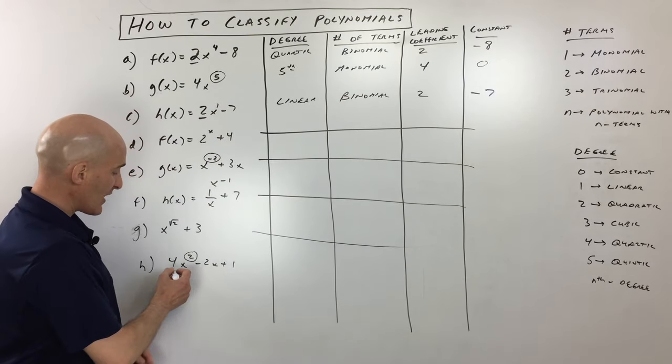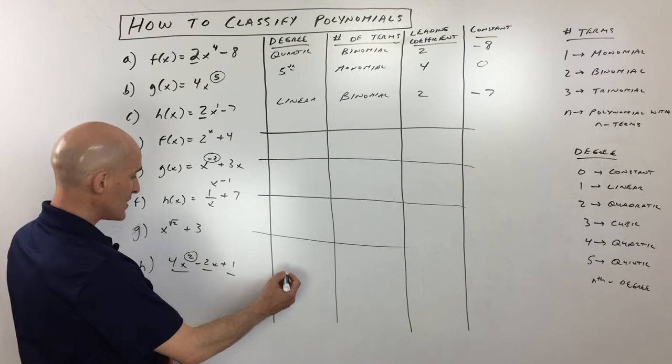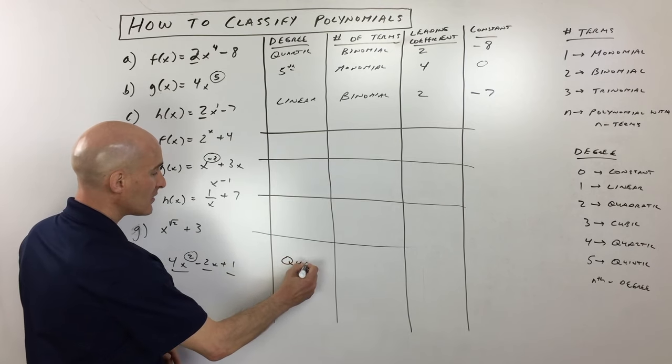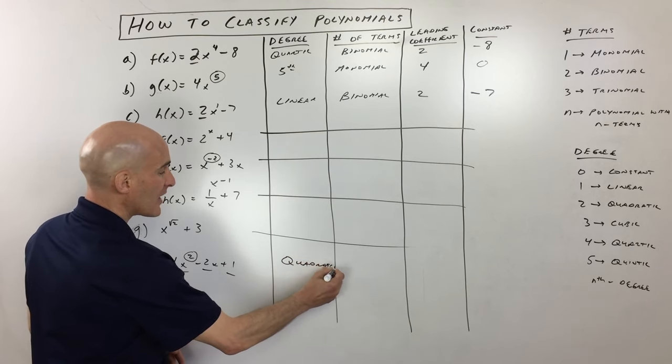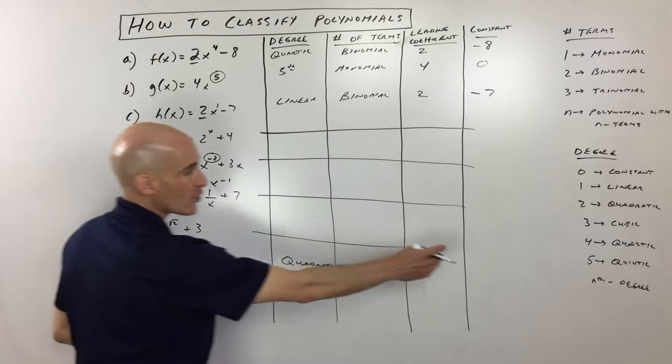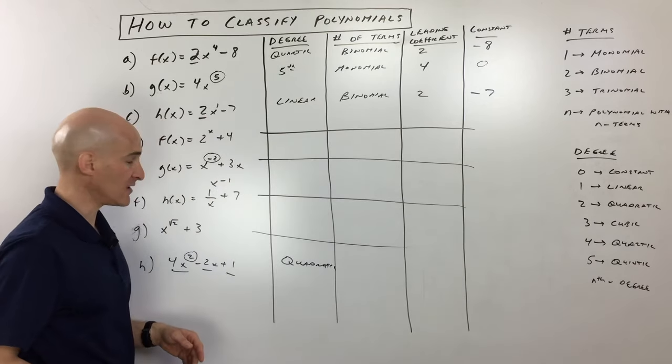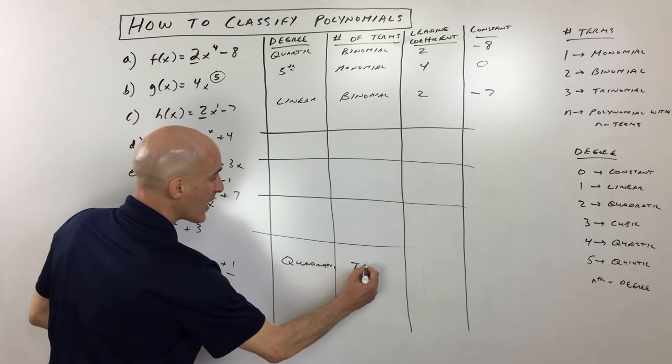Trinomial, like a tricycle, right? Three wheels. So we've got one, two, three. So this is a degree two, which is a quadratic. Sometimes students get quadratic and quartic confused. Quartic is actually four, and quadratic is actually a second degree. And then this is a trinomial.